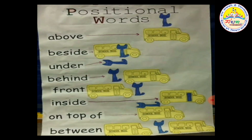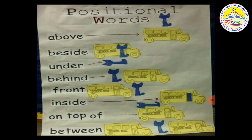Next, look at the cat — where is the top of the cat? The cat is on the top of the van. The last one: there is a cat between the two vans. The cat is between the vans. Above, beside, under, behind, front, inside, on top of and between — these are all the positional words.